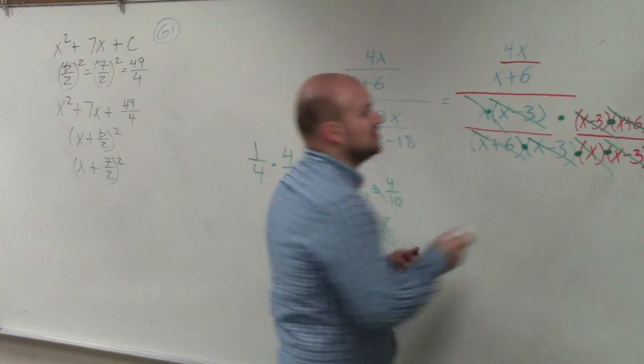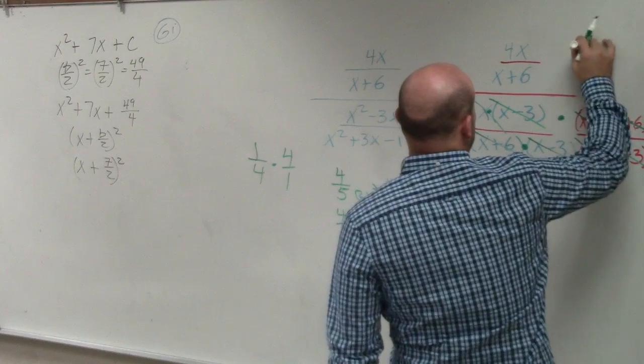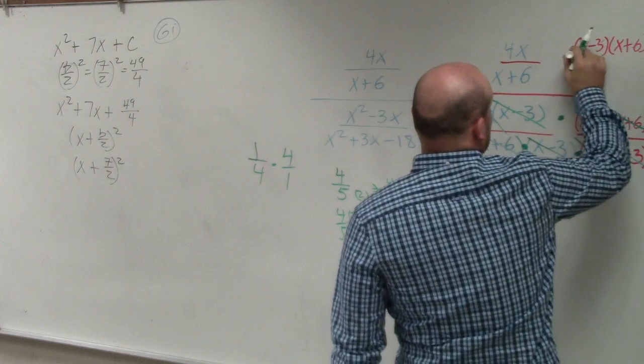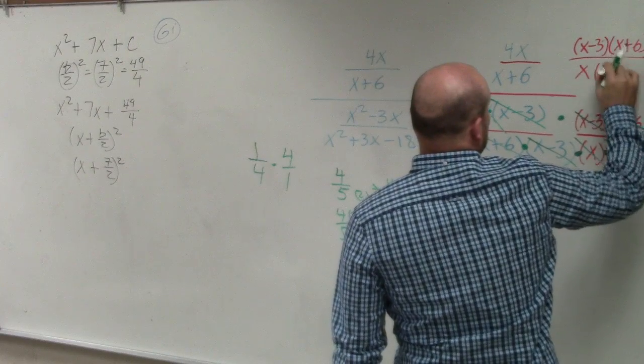So I have to multiply by my reciprocal x minus 3 times x plus 6 over x times x minus 3.